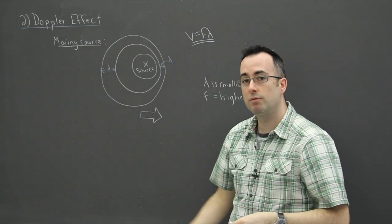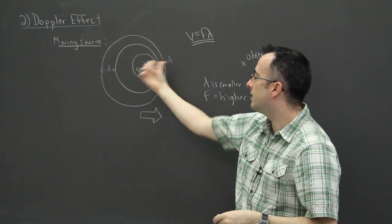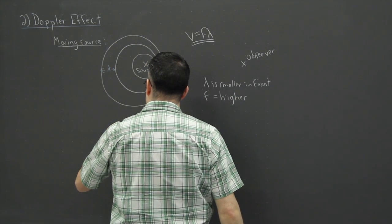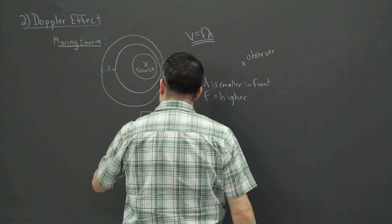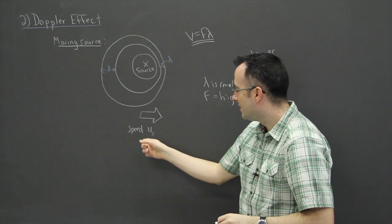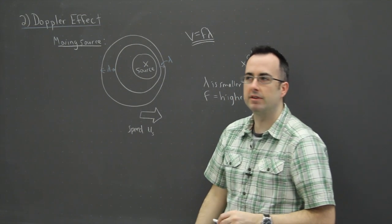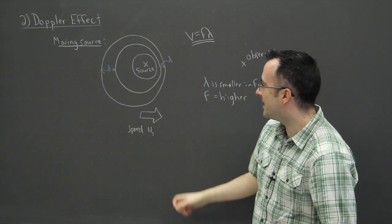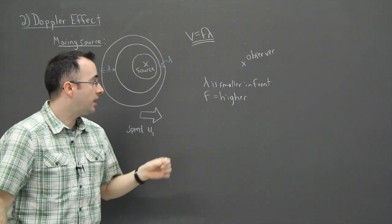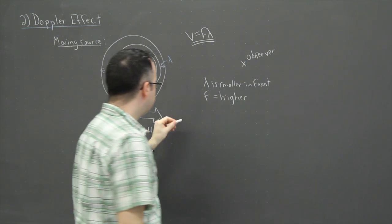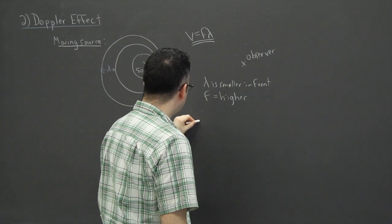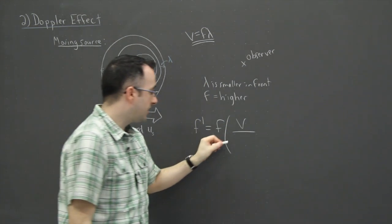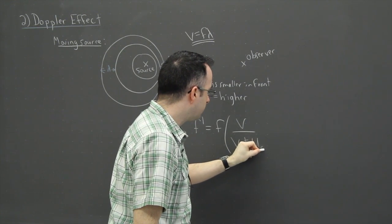That in a physical sense is why you hear a higher pitch. Say this is a car driving towards me — I'm the observer, and the person driving is coming towards me with some speed. We're going to call it u_s — the speed of the source. The equation for a moving source goes: f' = f × (v / (v ± u_s)), where f' is the observed frequency and f is the emitted frequency.